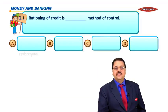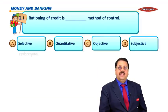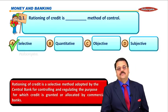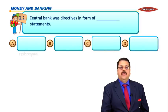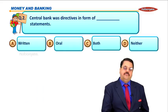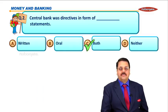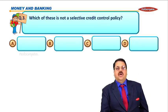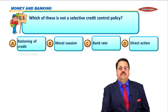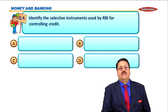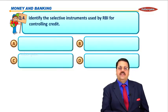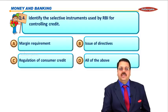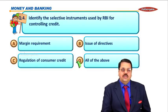MCQs: First — rationing of credit is a selective method. Central bank issues directives in both oral and written form. Which of these is not a selective credit control policy? — Bank rate. Identify the selective instrument used by RBI for controlling credit — all of the above.